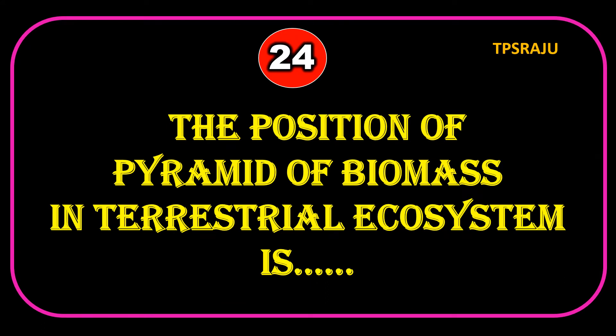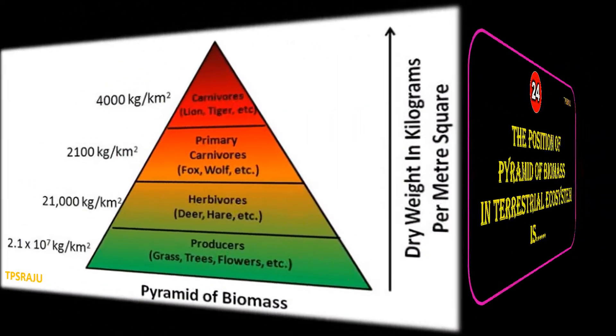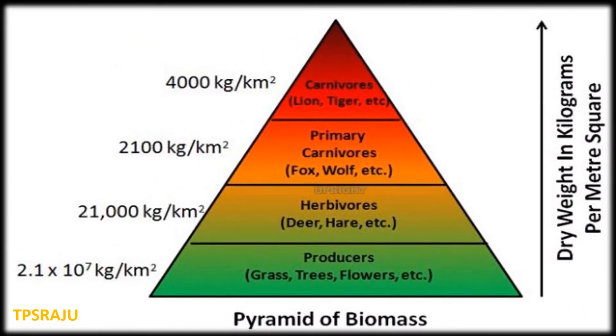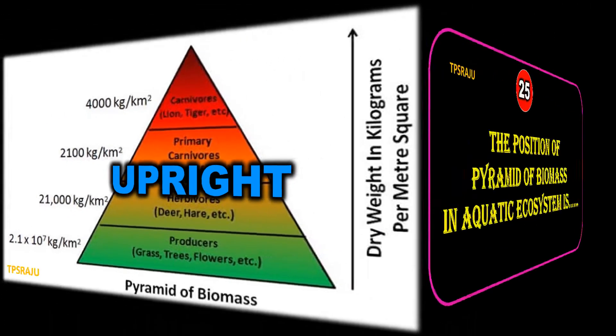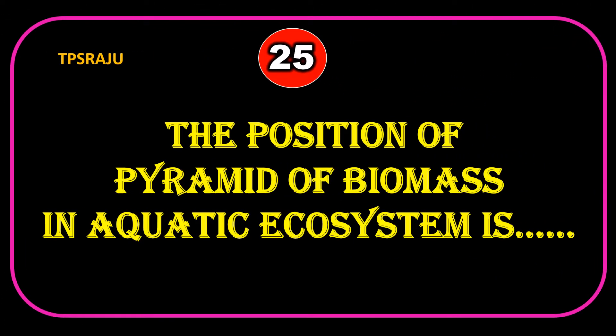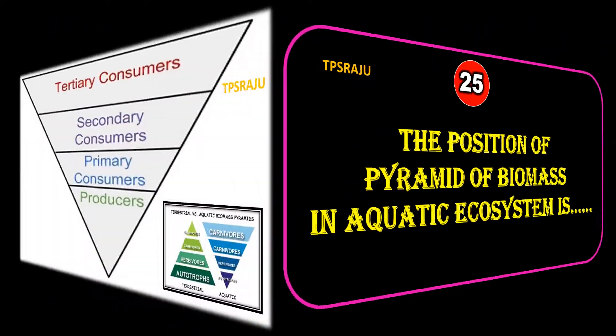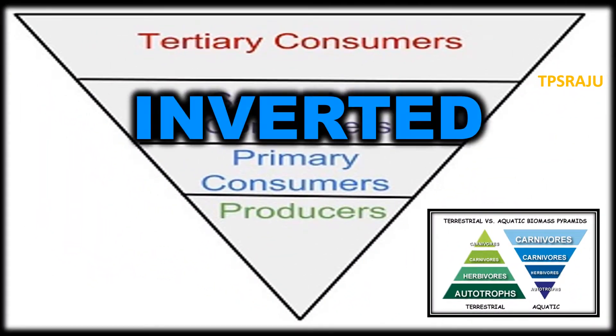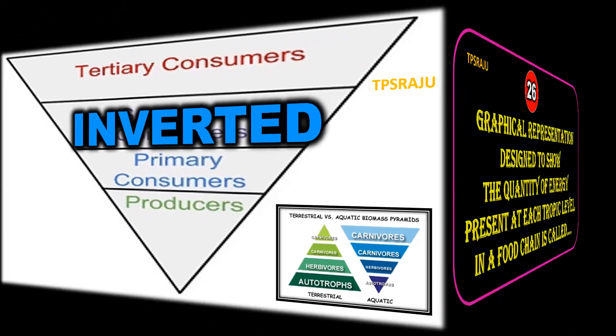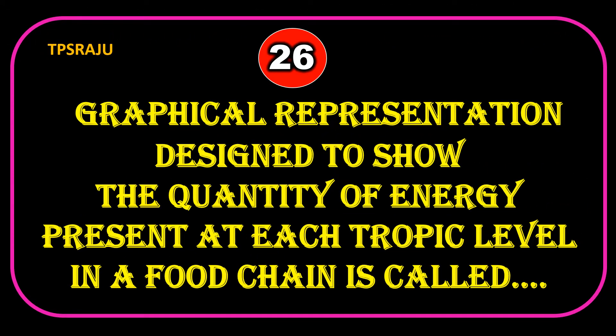The position of pyramid of biomass in a terrestrial ecosystem is upright. The position of pyramid of biomass in an aquatic ecosystem is inverted. The pyramid that shows the quantity of energy present at each trophic level in a food chain is called pyramid of energy.